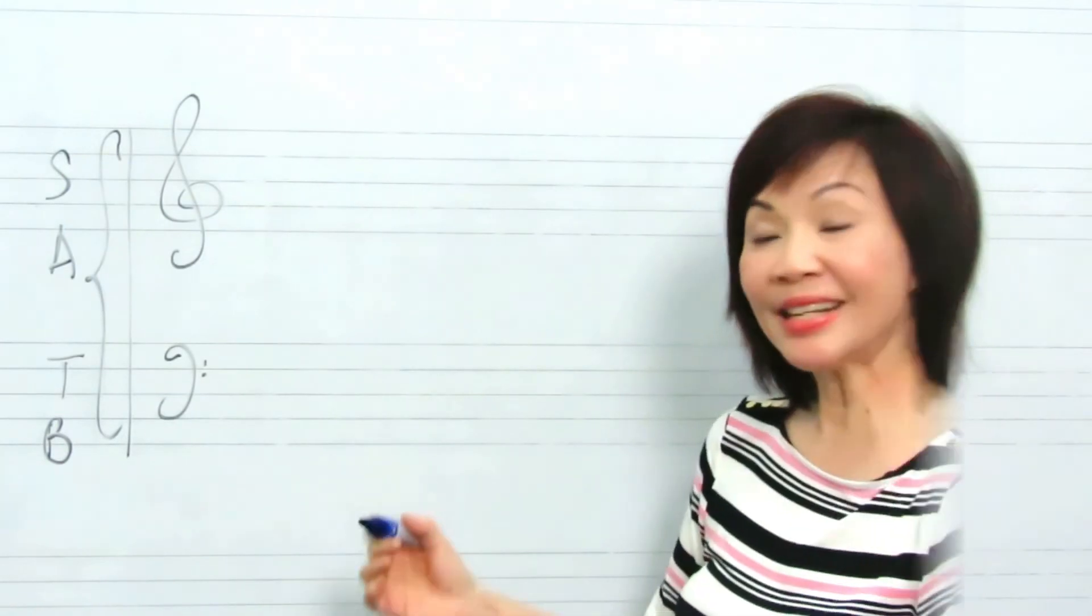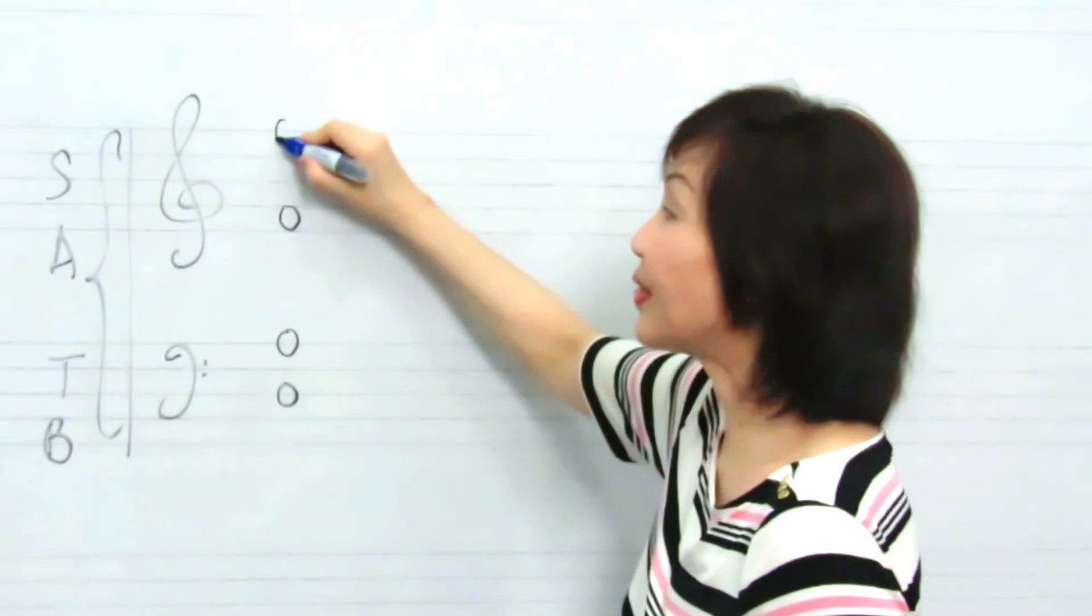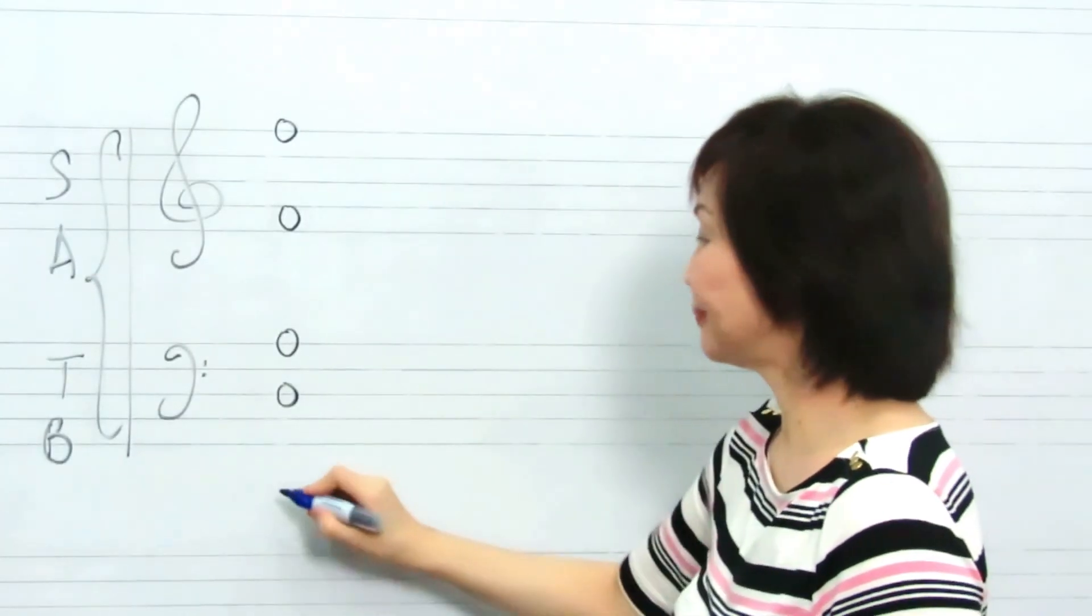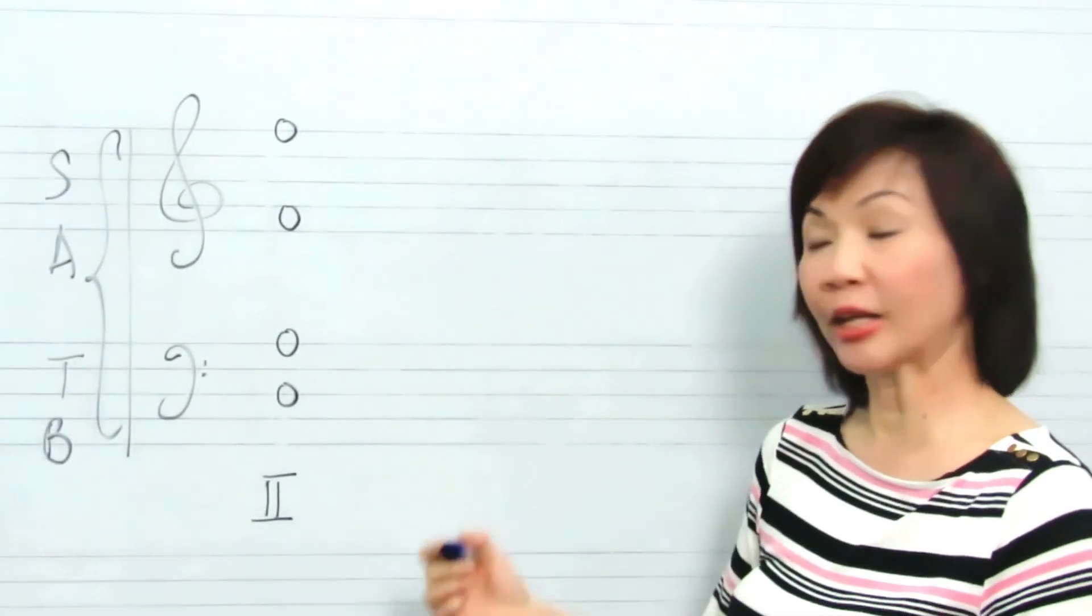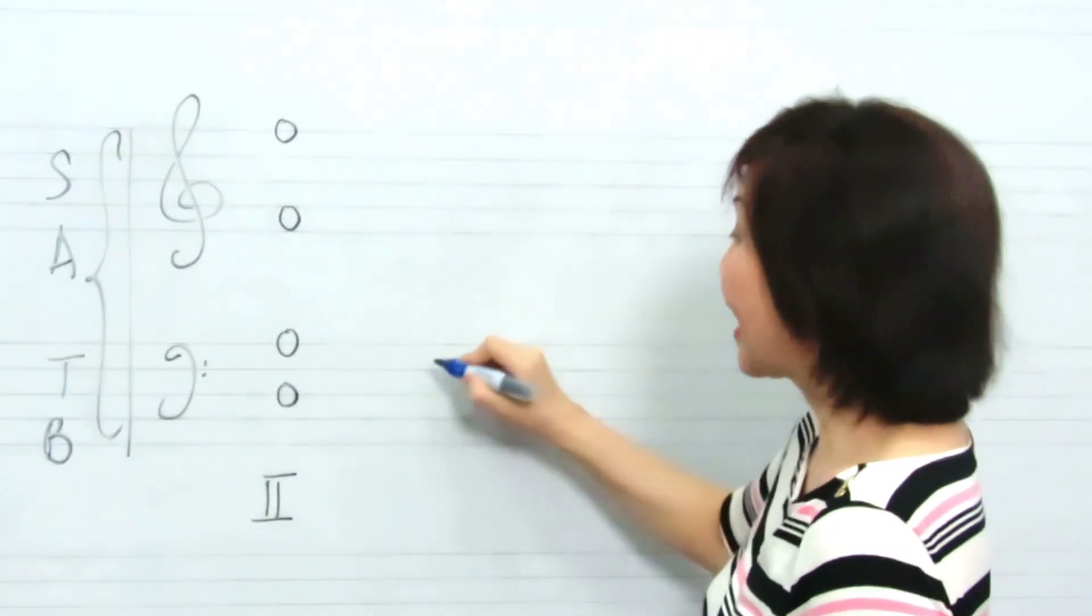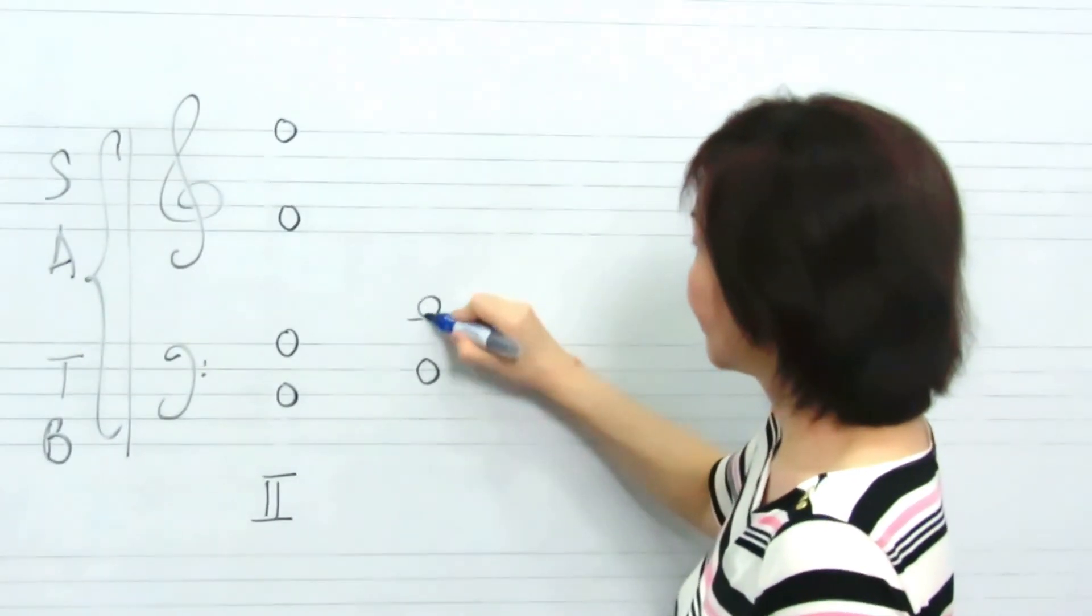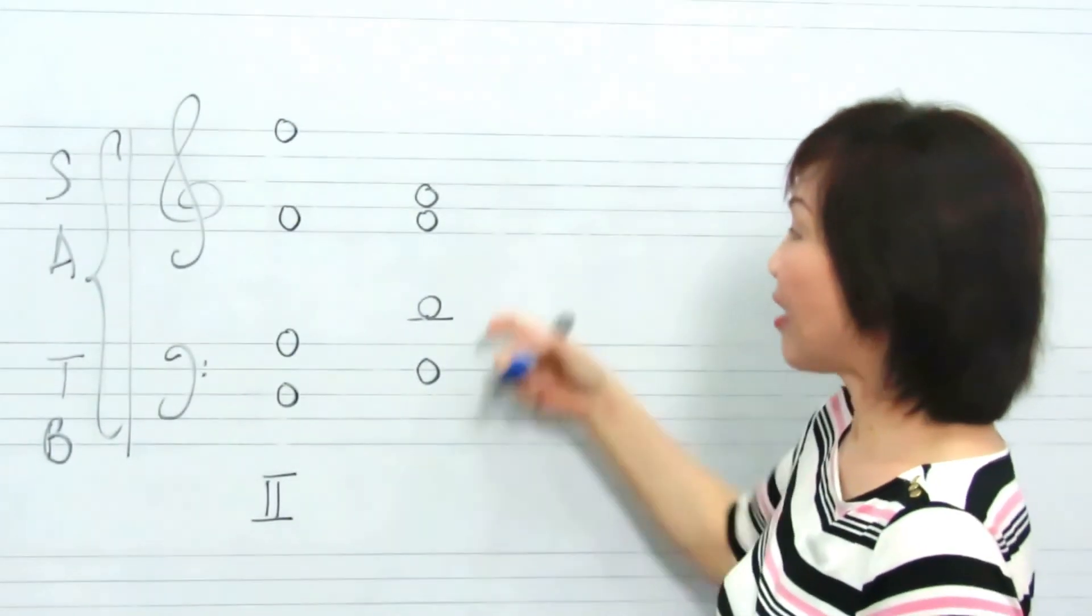When writing a secondary chord in root position, we double the third of the chord. Thus, D, F, F, A. We can also write the secondary triad or chord in first inversion. Thus, D, F, F, A.